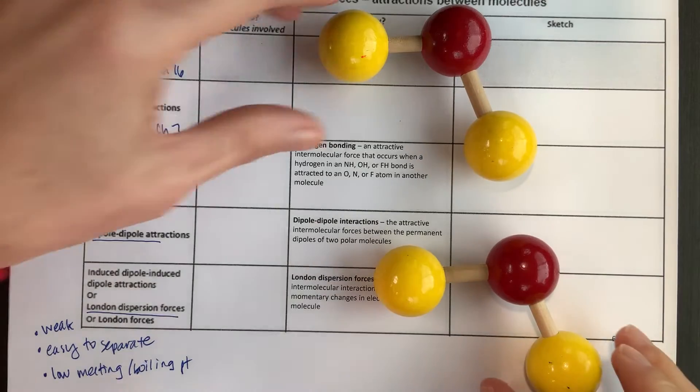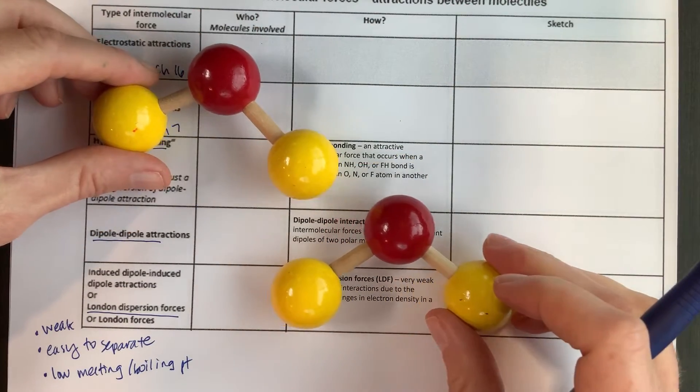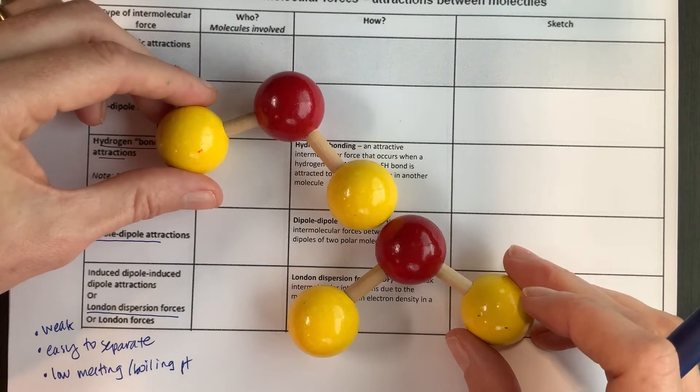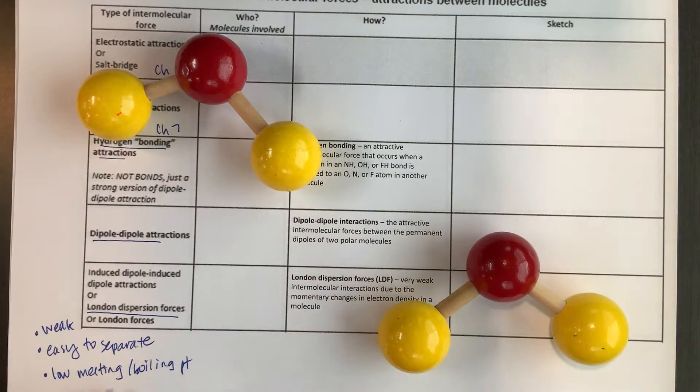And because they're easy to separate, that gives us relatively low melting and boiling points. Because when you melt something or you boil something, we're pulling the molecules apart. So if they're weakly attracted, it's easy to pull them apart. Doesn't take much energy, low melting point and boiling point.